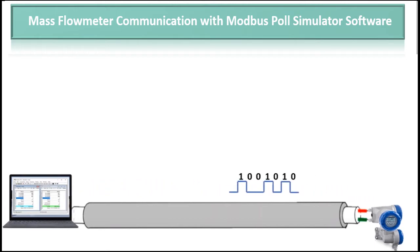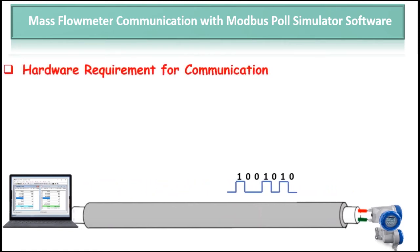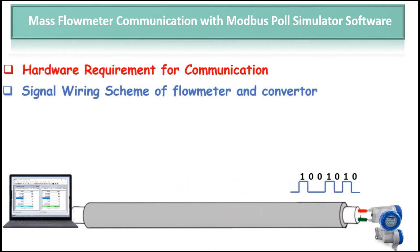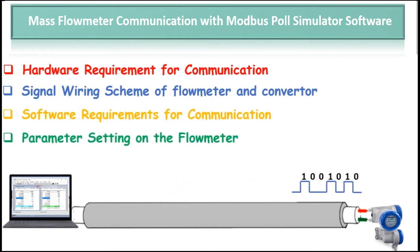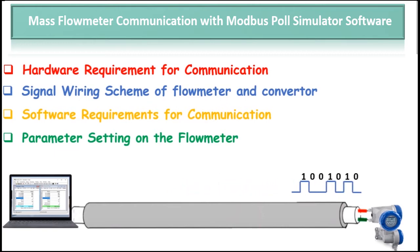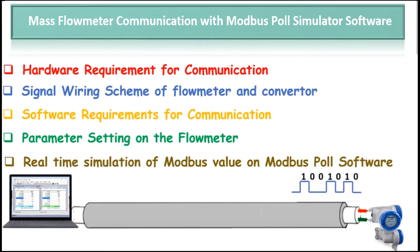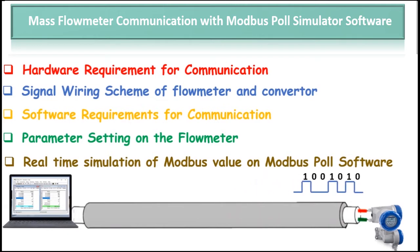The main content we cover for this video includes the following topics. First is the hardware requirement for the communication. Second, we see the signal wiring scheme of flow meter and converter. Then we see the software requirement for the communication. Then we see the parameter setting of Modbus RS485 on the flow meter side, and how we can change this parameter. And finally, we will see the real-time simulation of Modbus values on the Modbus Poll software.